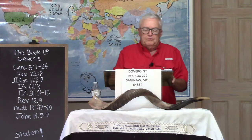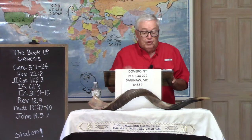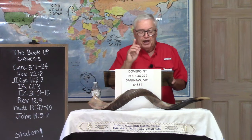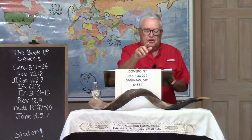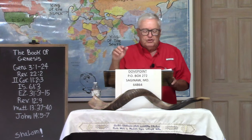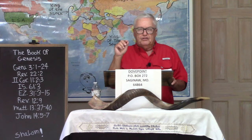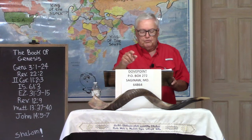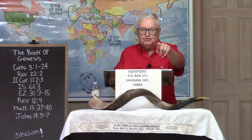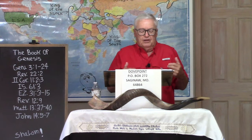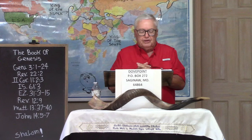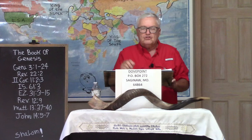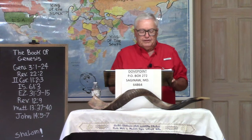Verse 2: 'And the woman said unto the serpent, We may eat of the fruit of the trees of the garden.' Verse 3: 'But of the tree which is in the midst of the garden, God hath said, You shall not eat of it, neither shall you touch it, lest you die.' You need to underline the word touch. 'But of the tree which is in the midst of the garden, God hath said, You shall not eat of it, neither shall you touch it, lest you die.'